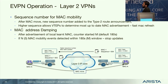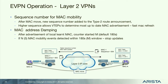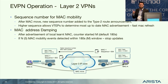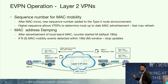EVPN adds extra value for layer 2: there are sequence numbers in MAC routes, so when a MAC moves to a new host and is re-announced with an updated sequence number, all peers receiving the newer sequence number learn the new destination and flush old information — quickly refreshing MAC tables across the layer 2 domain. There's also MAC address dampening: if a MAC flaps between VTAPs more than five times within 180 seconds, it stops being announced, preventing churn.